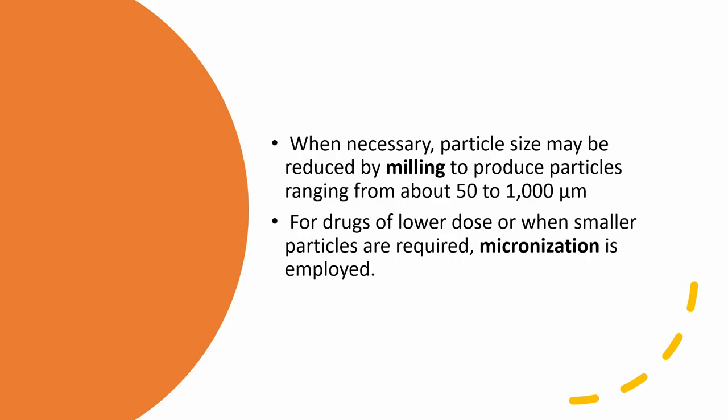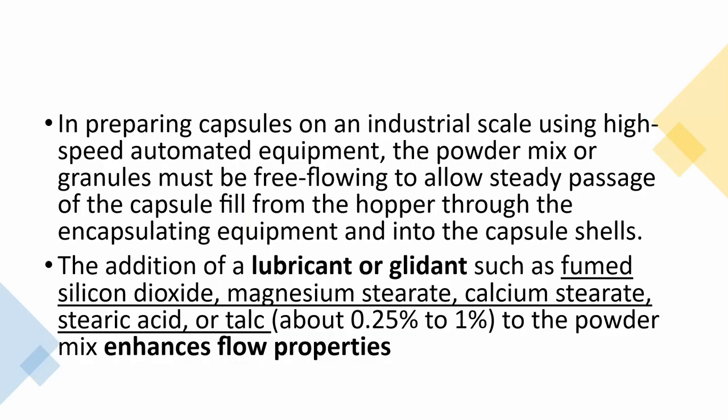If you need lower particle sizes, you can employ micronization, which forms much finer powders than ordinary milling. In industrial-scale capsule preparation using high-speed automated equipment, the powder mix or granules must be free-flowing to allow steady passage from the hopper to the encapsulating equipment. To achieve this, you can add a lubricant or glidant such as fumed silicon dioxide, magnesium stearate, calcium stearate, stearic acid, or talc to enhance flow properties.